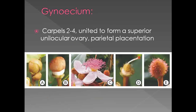About the gynoecium: the carpels are two to four and are united. In some of the genera, the ovary is unilocular. The ovary is superior and shows presence of parietal placentation. So the number of carpels is between two to four; they are united to form a superior unilocular ovary and show presence of parietal placentation.